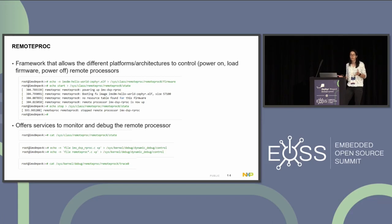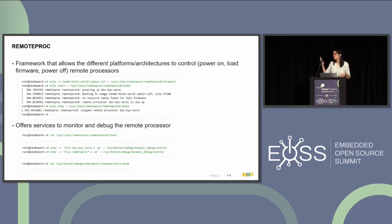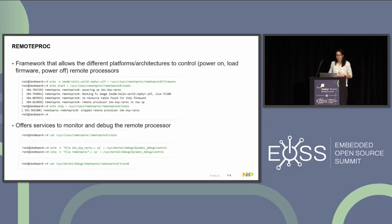Usually loading at probe time is not recommended because the Linux filesystem might not be ready when the driver is probed. But this can be fixed by using initramfs to boot the kernel, or having the Remote Proc driver compiled as a module rather than built in. A third option is to start the DSP before Linux is booted — done from U-Boot — and is usually used if you have hard constraints on boot time. Remote Proc also offers support services to monitor and debug the remote processor.